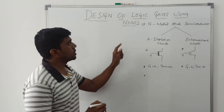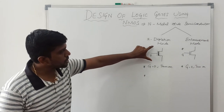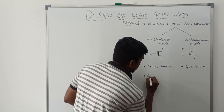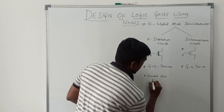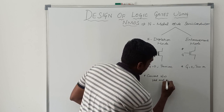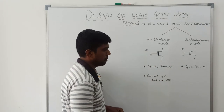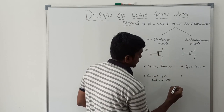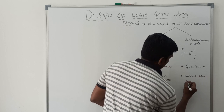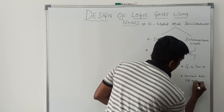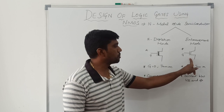In logic gate design or any boolean expression design using NMOS logic, the depletion mode transistor is connected between VDD and the output terminal. The enhancement mode NMOS transistor is connected between VSS and the output terminal.